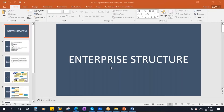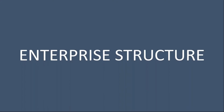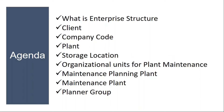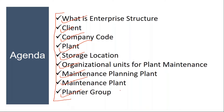This conference will now be recorded. We'll be starting our next topic: enterprise structure. In the enterprise structure, the topics we are going to cover are: what is enterprise structure, what is client, what is company code, what is plant, and what is storage location. Then we'll cover organizational units for the plant maintenance model, including maintenance plant, maintenance planning plant, and the plan.